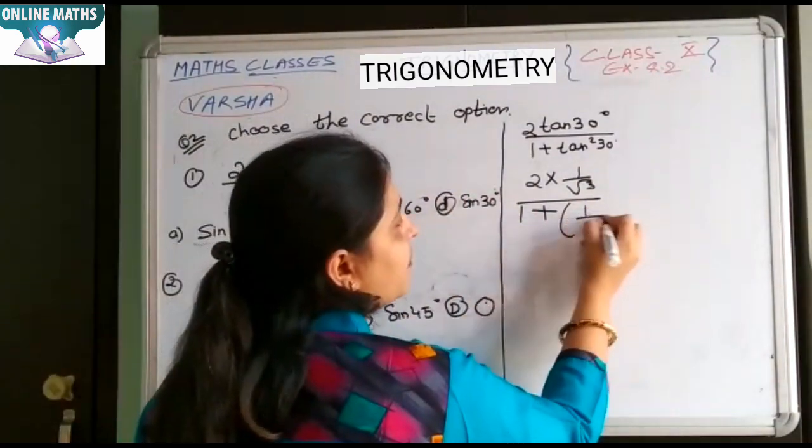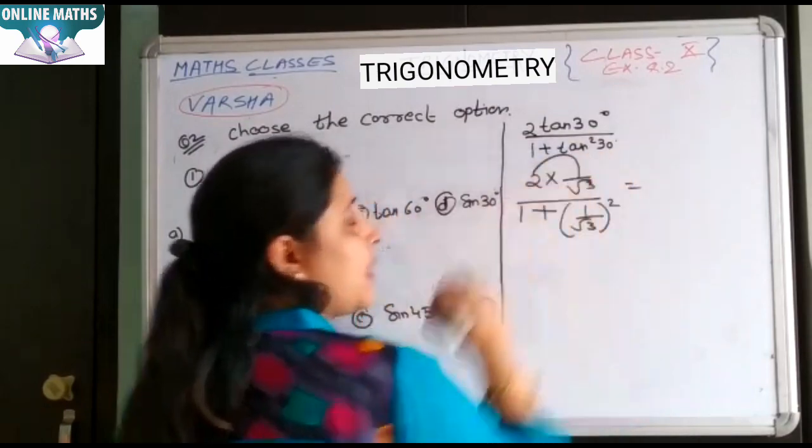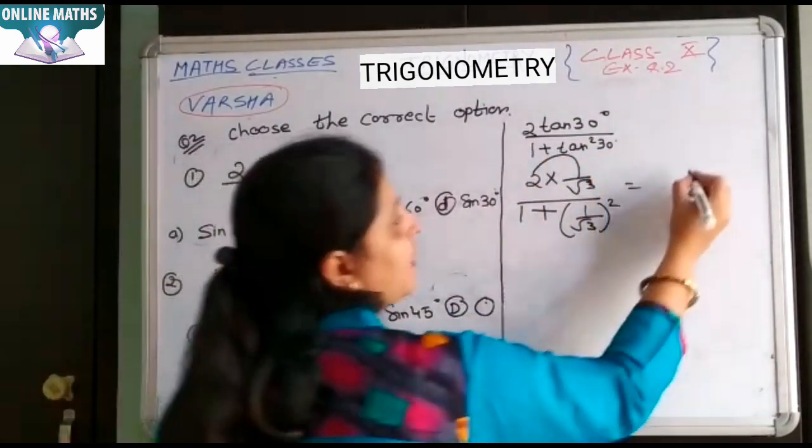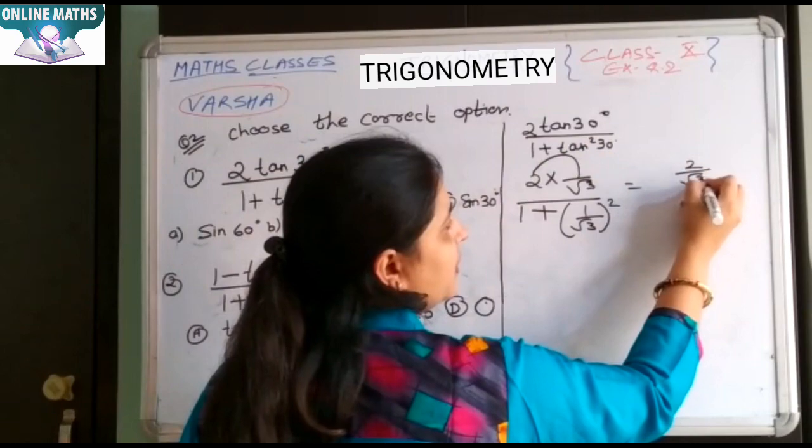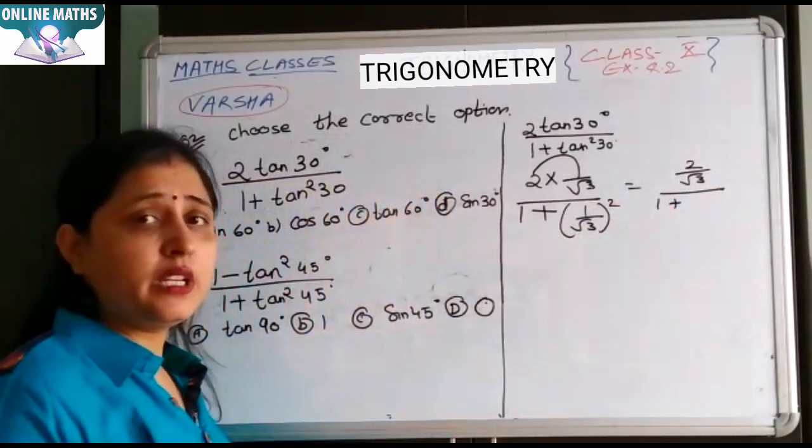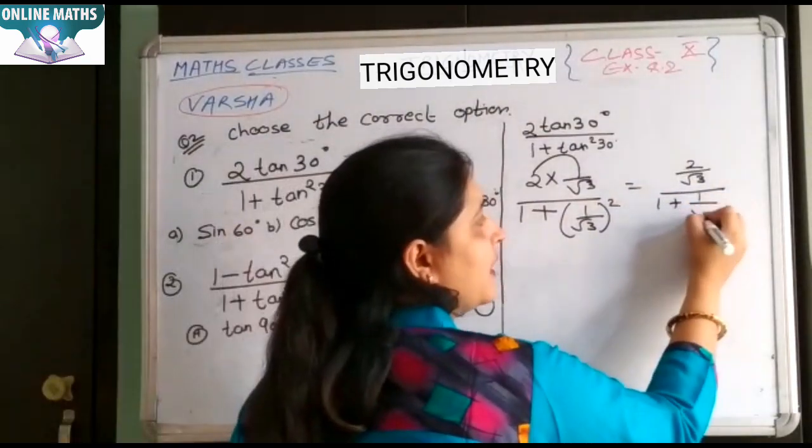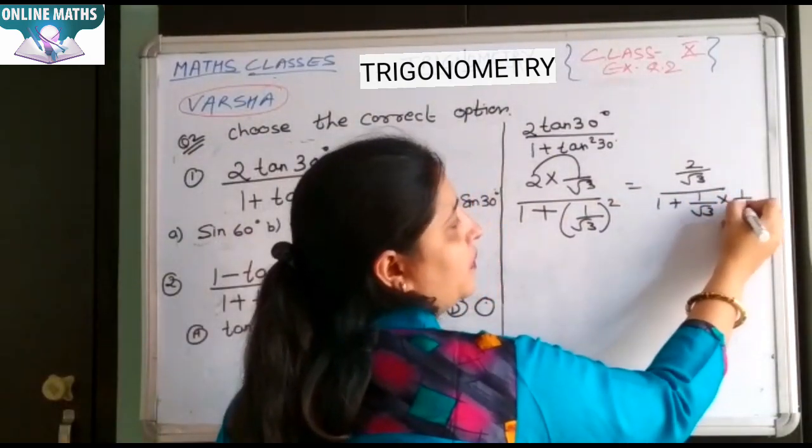Tan² 30° is 1 upon root 3 whole square. Upar multiplication hai, to multiply karein 2 upon under root 3 upon 1 plus 1 upon under root 3 whole square. It means 1 upon under root 3 into 1 upon under root 3.